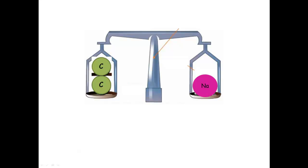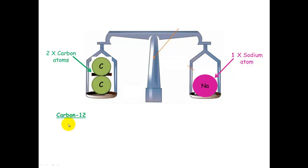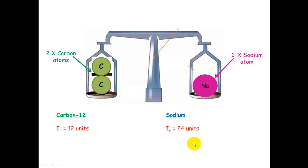Here I've taken one sodium atom and it has the equivalent mass of two carbon atoms. We know that one sodium atom is equivalent to two carbon atoms, and carbon-12 has a relative isotopic mass of 12 units. Therefore, the mass of one sodium is double the size, so sodium will have a relative isotopic mass of 24 units.